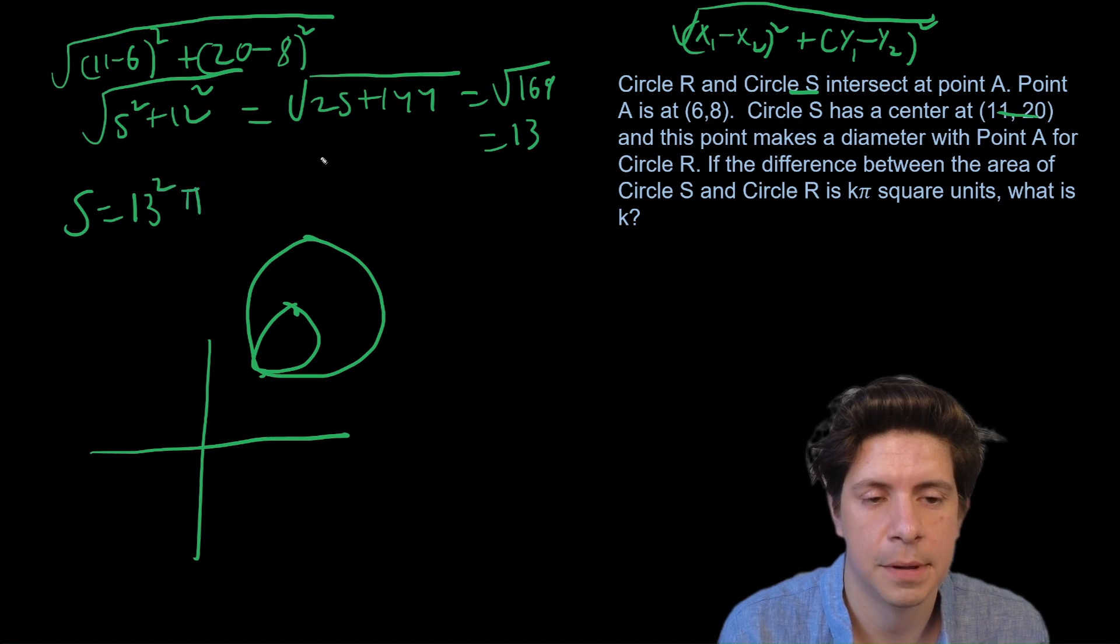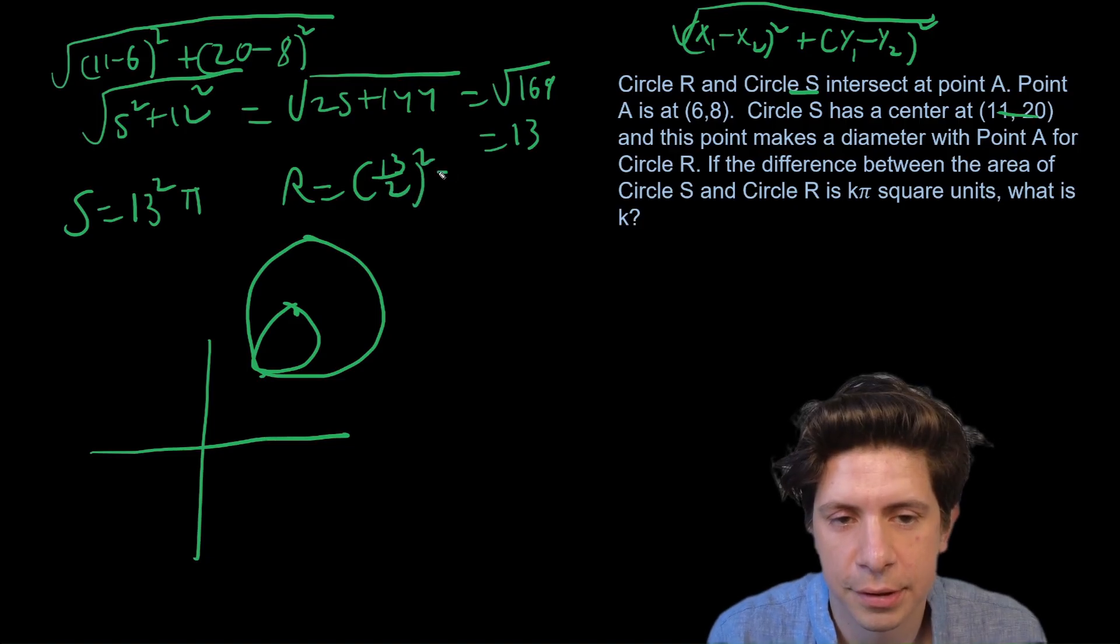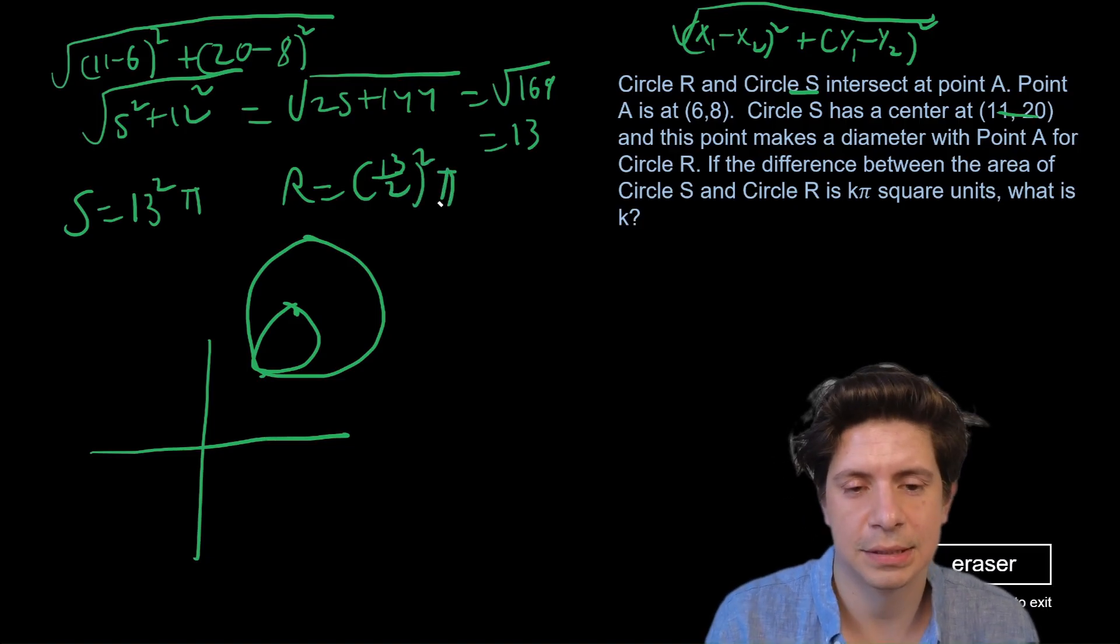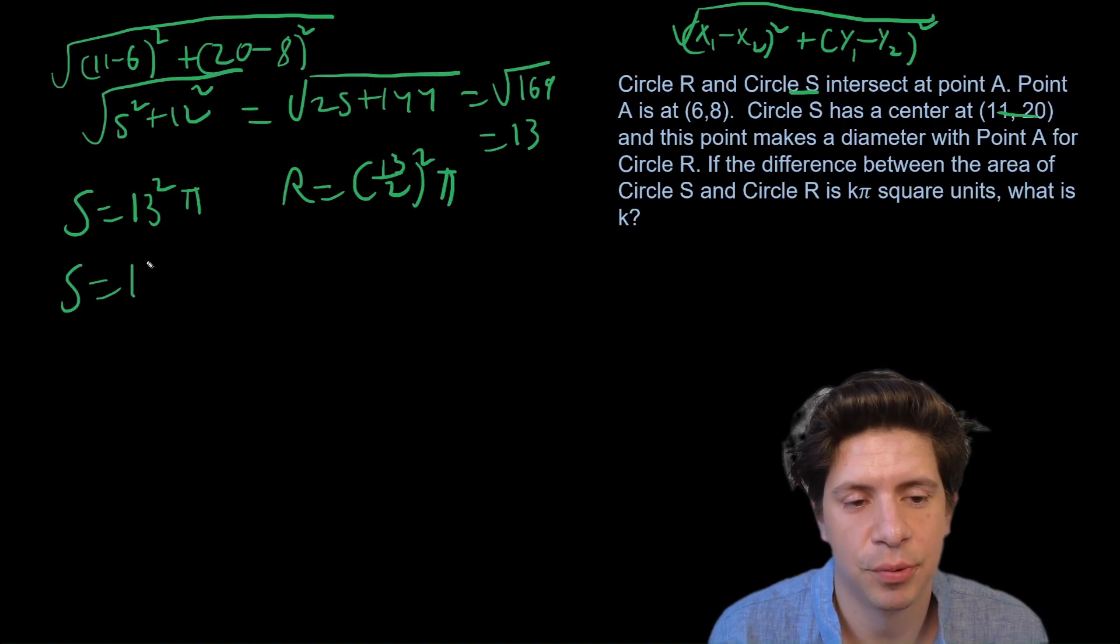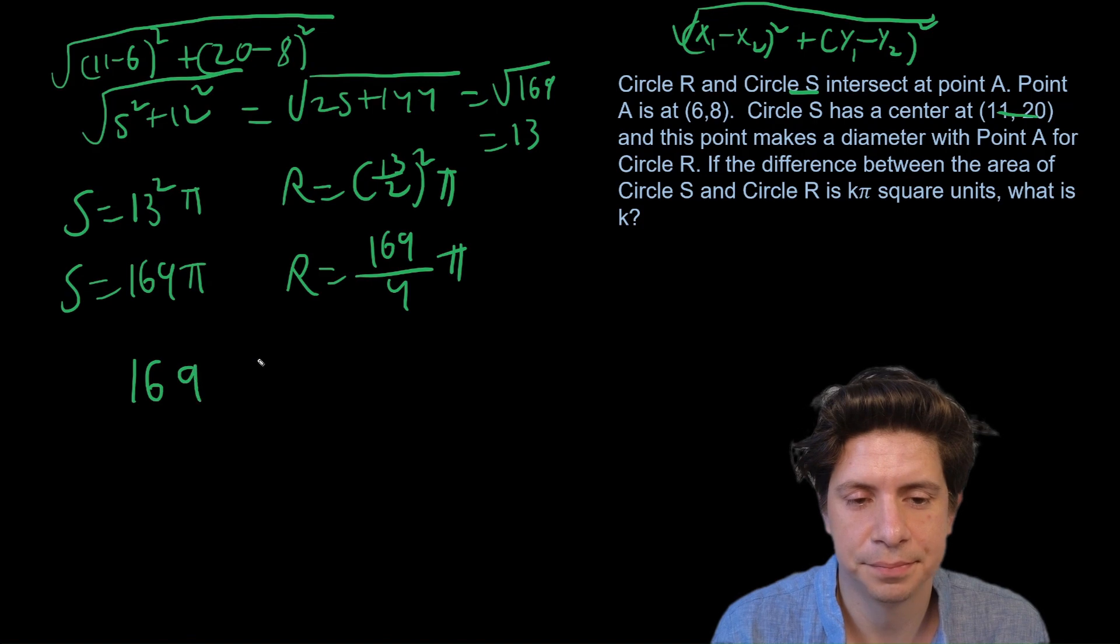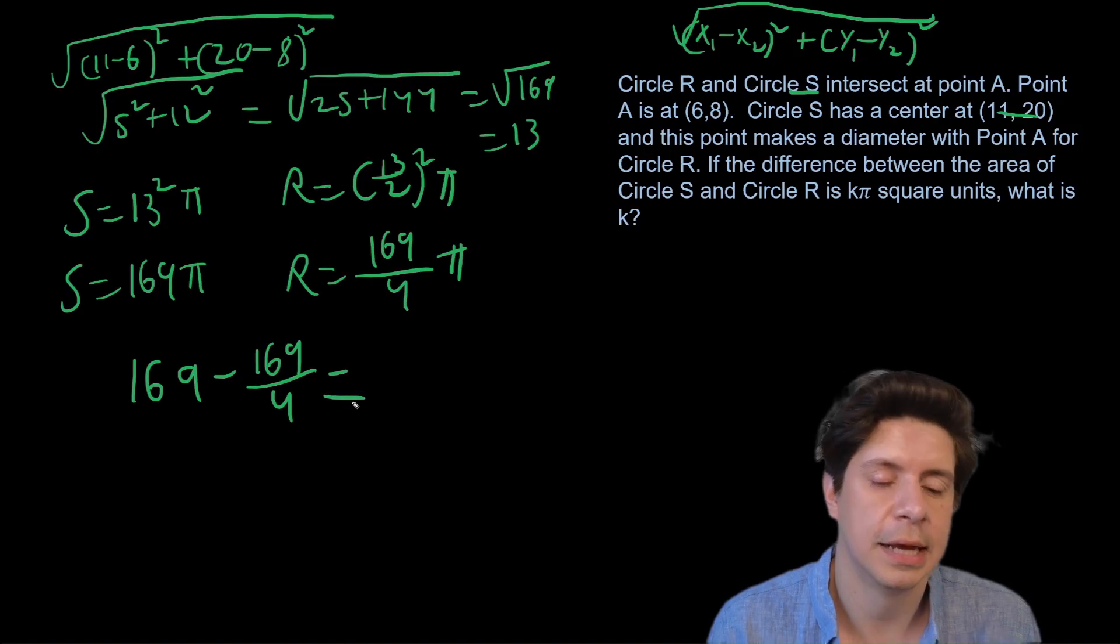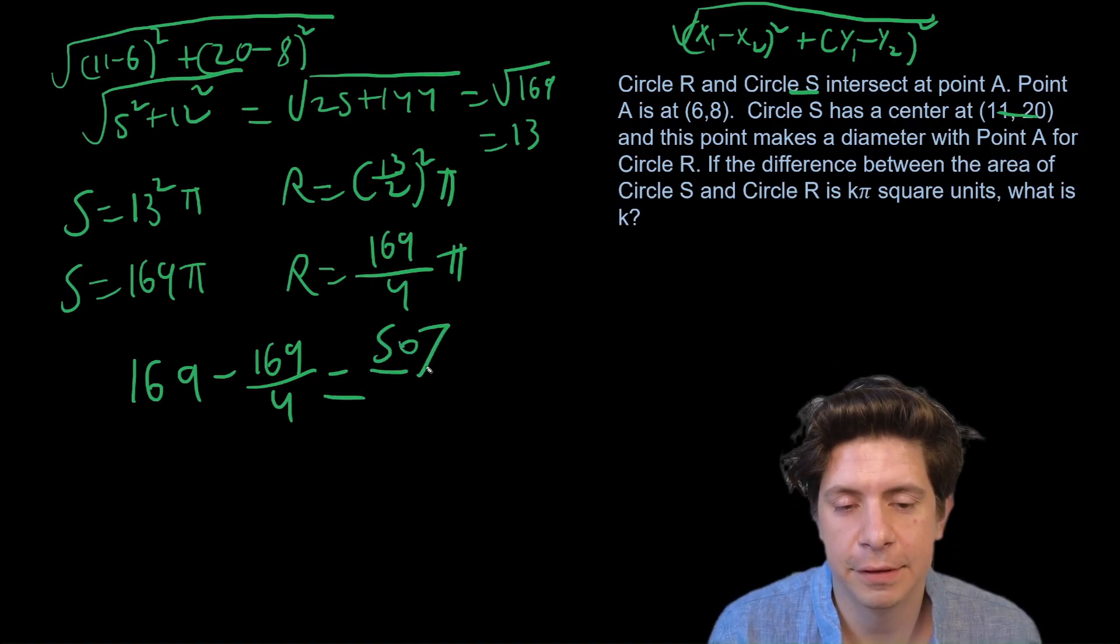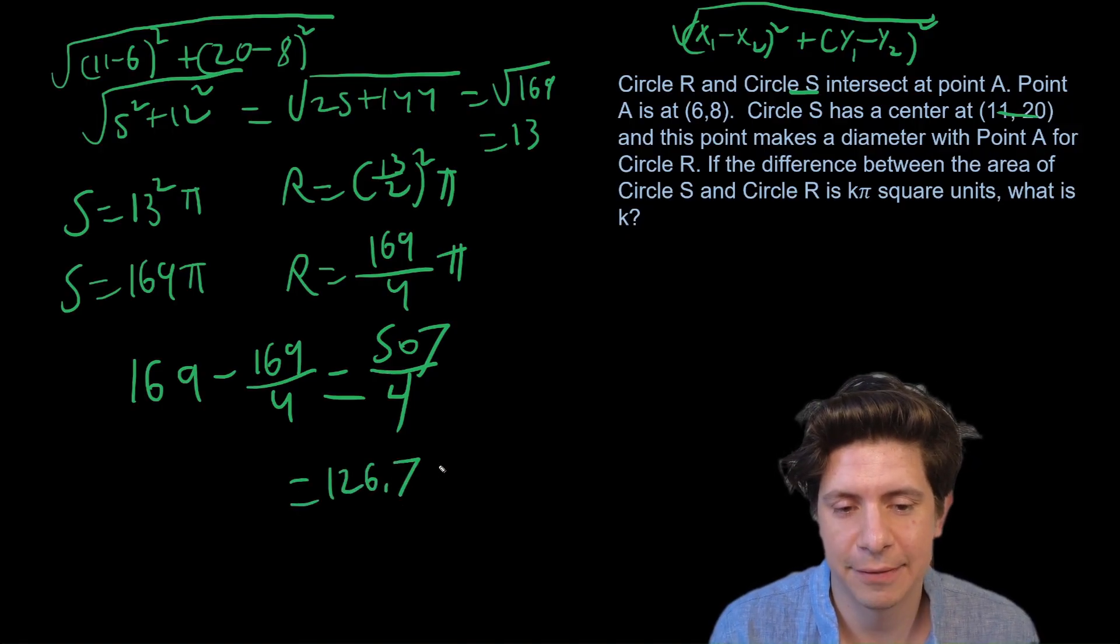So S is going to equal 13 squared π. R will equal (13/2) squared π. I'm going to erase this little drawing. So S equals 169π. R will equal 169/4 π.